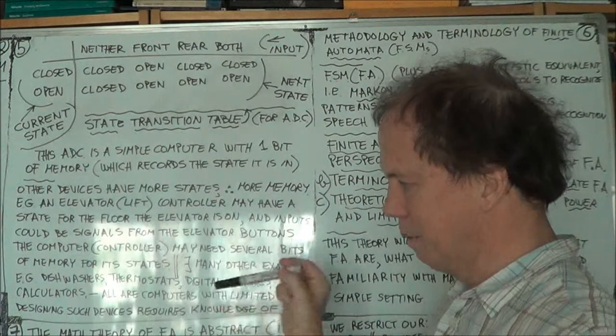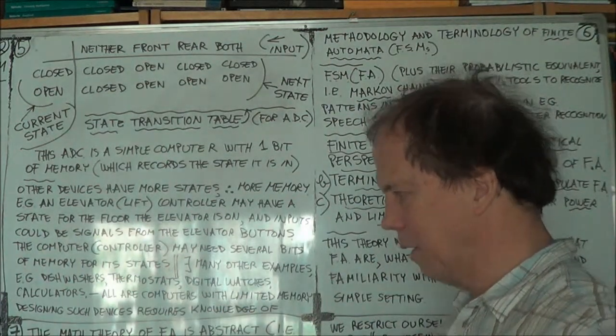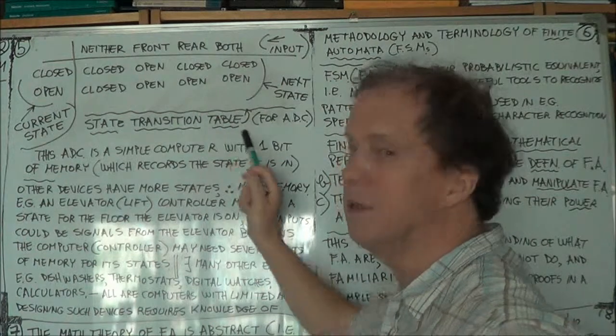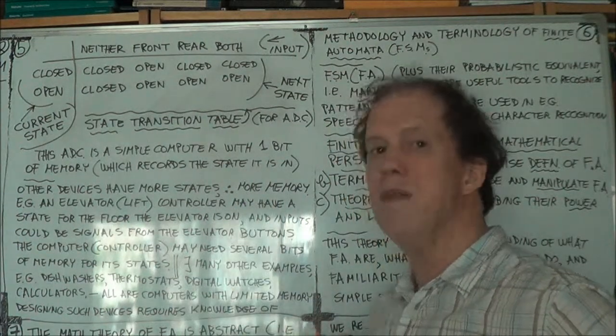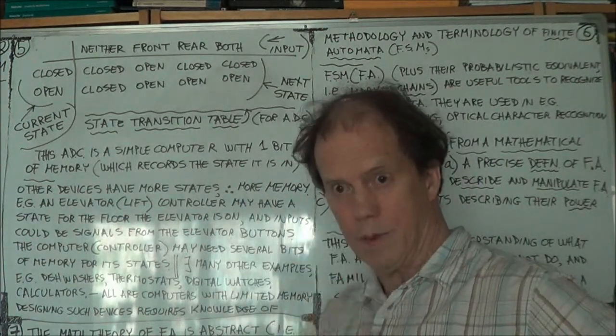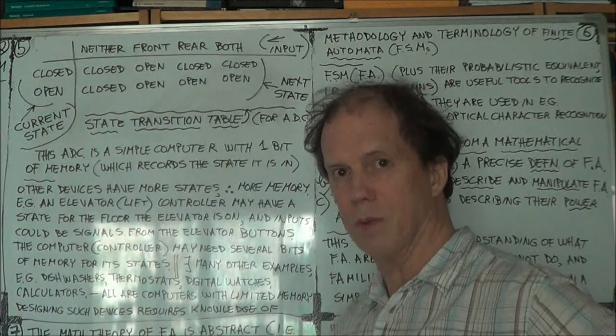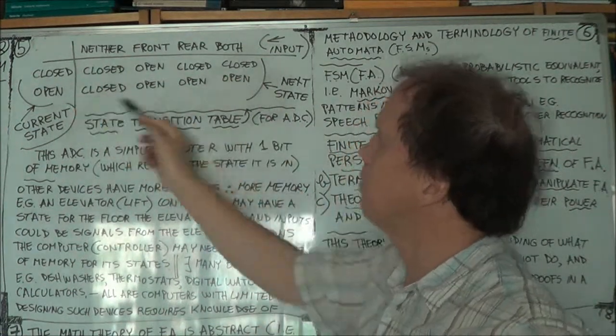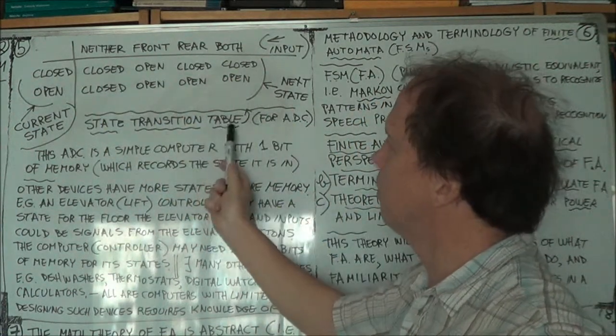Now, we can't see it, but in the previous session we had a state diagram, and this is a table. The diagram implicitly had those eight state transition rules, and here it's made explicit in the form of a table.